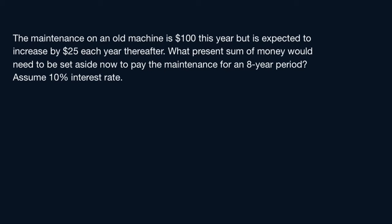The maintenance on an old machine is $100 but is expected to increase $25 each year thereafter. What's the present value that needs to be set aside today if you want to pay the maintenance for an eight-year period? The interest rate is 10%, so essentially here you have to bring everything to present value.